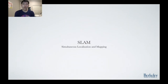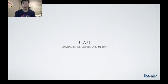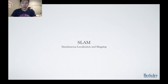First, SLAM. SLAM stands for simultaneous localization and mapping. Localization refers to the process of determining the current position of the camera with respect to some representation of the world. Mapping refers to the process of generating a representation of the world from a sequence of camera frames. These two problems are deeply intertwined.